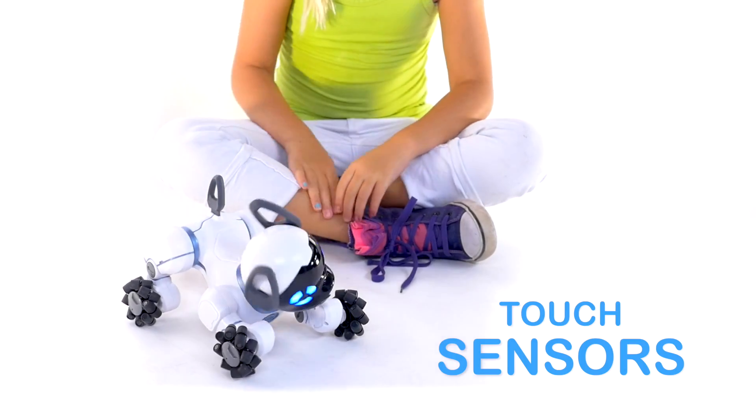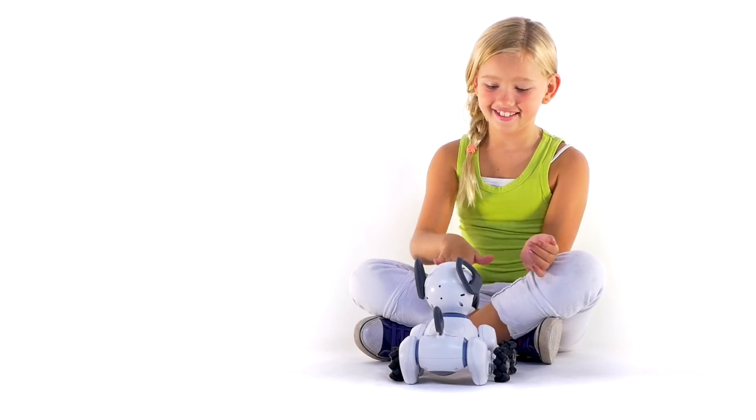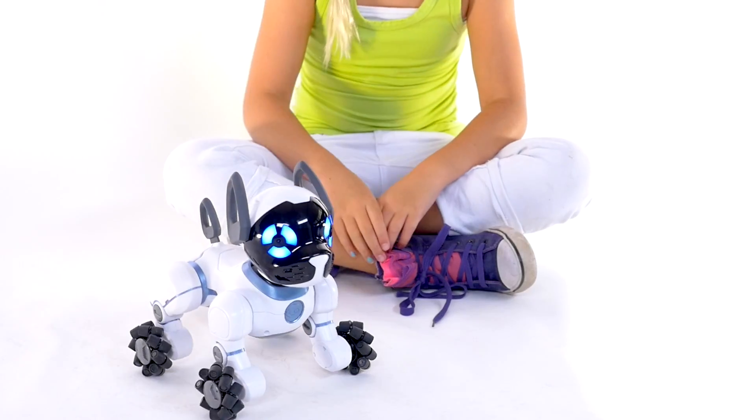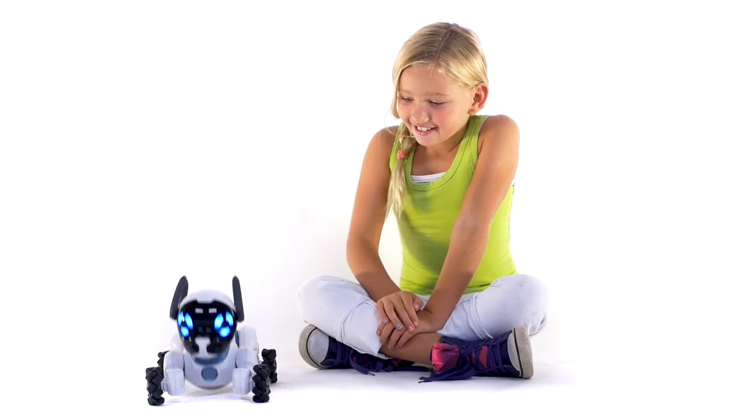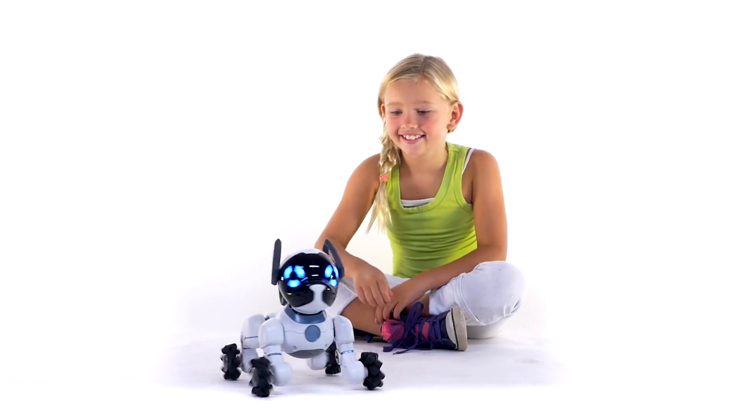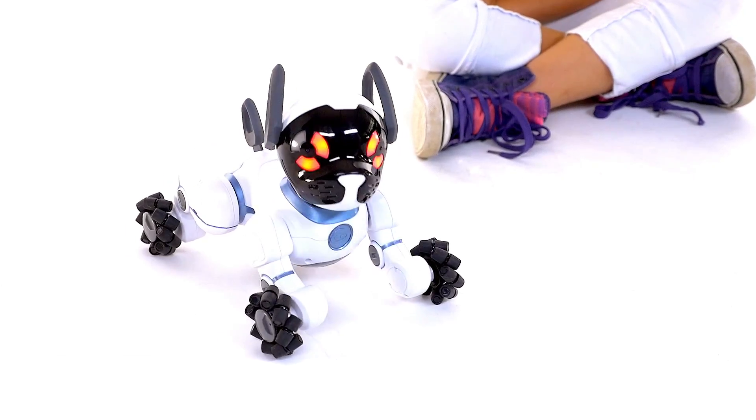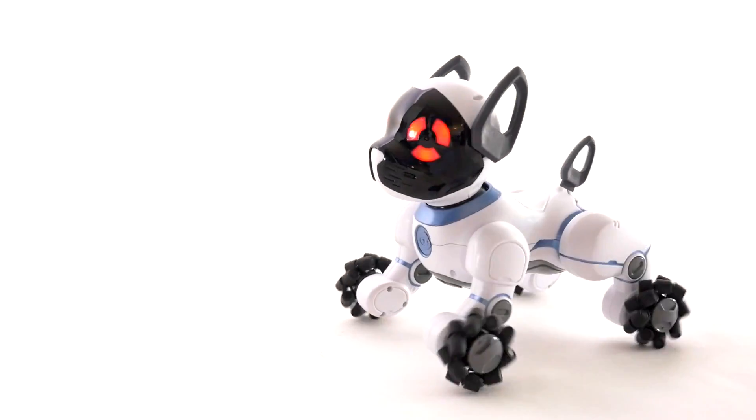One of the ways you can interact with Chip is through touch. Chip loves it when you pet his head. When you do, he'll either sit or lay down. Just like a real dog, Chip doesn't like being poked. If you poke him too hard, he might get angry.